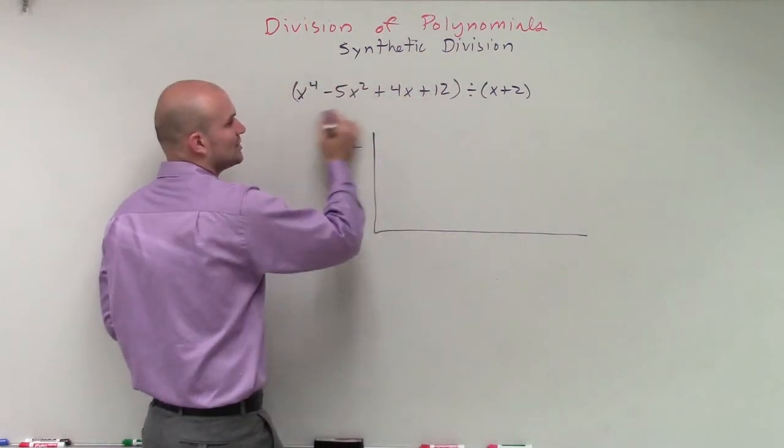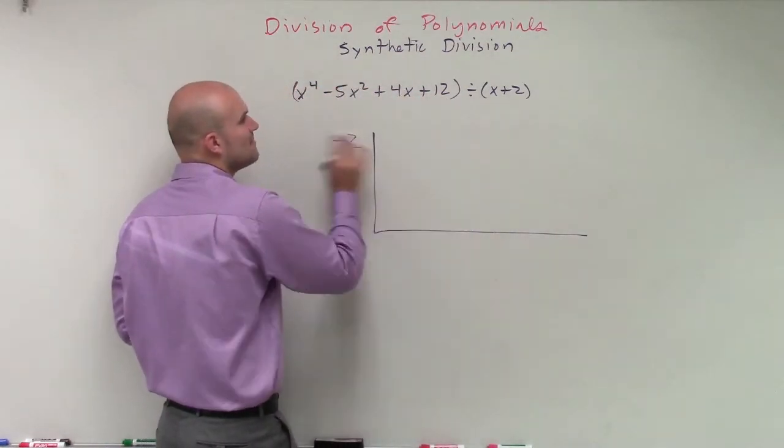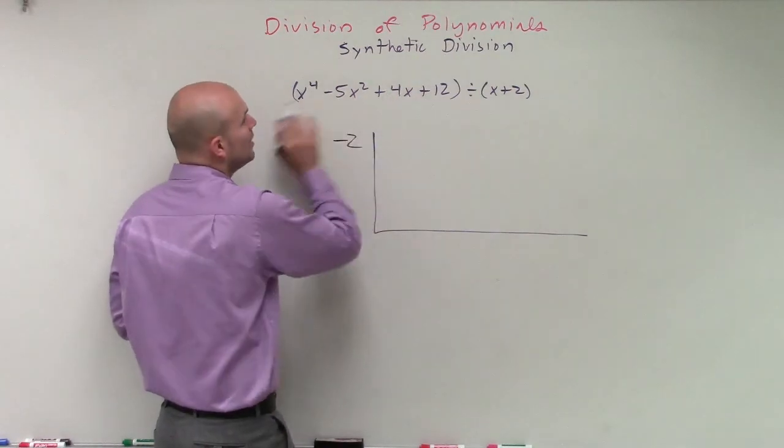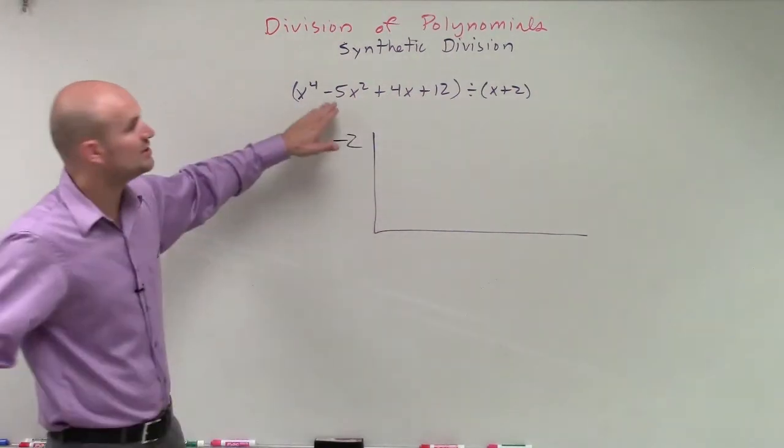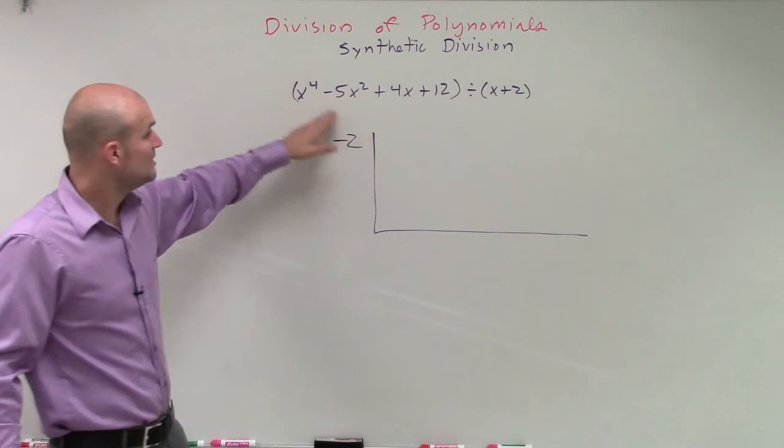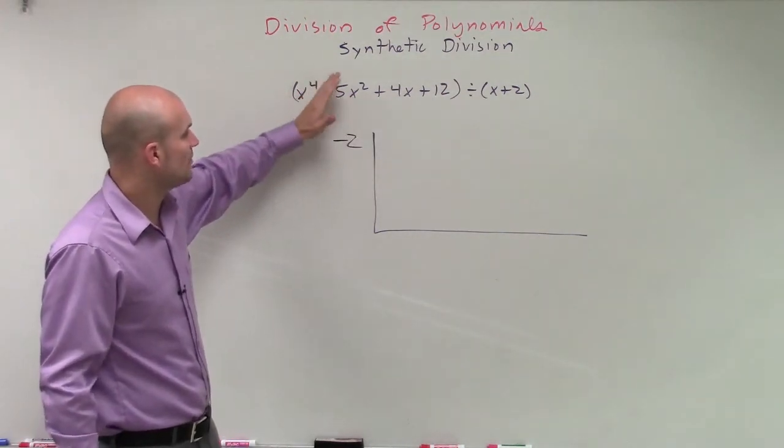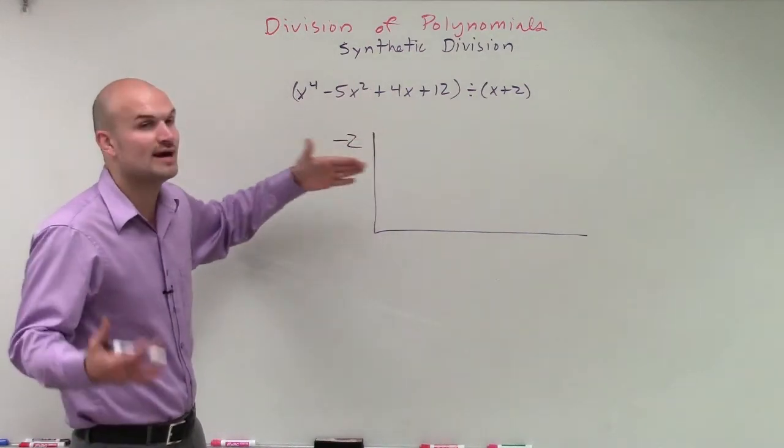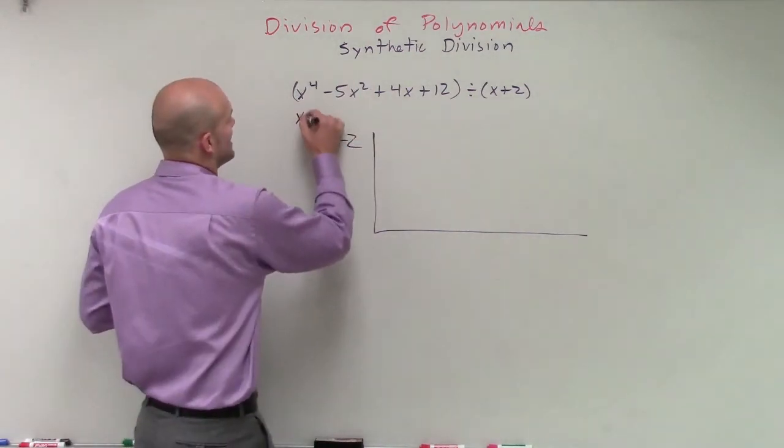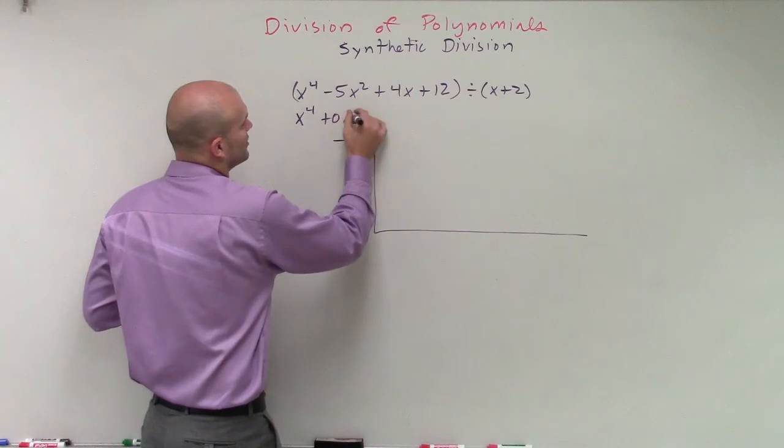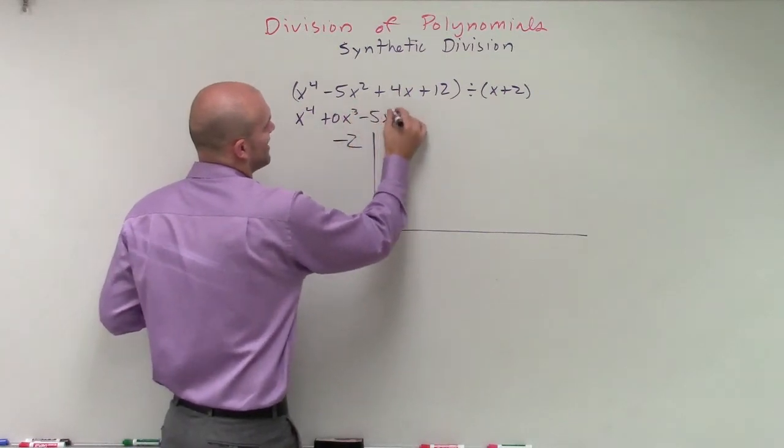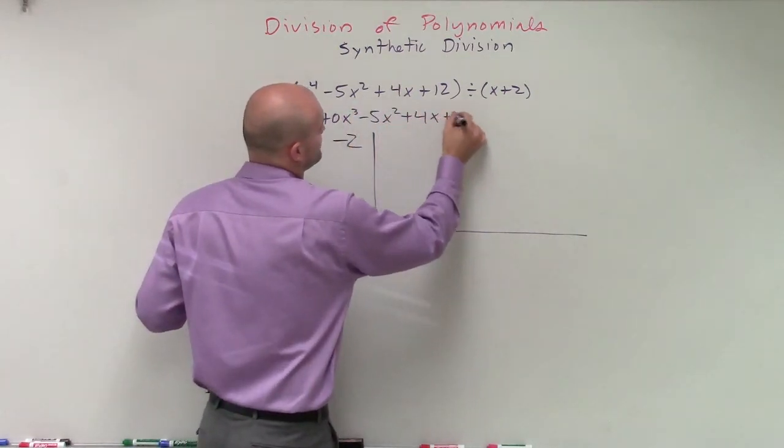Then we take the coefficients and our constants and label them. Make sure we're not missing any, which we are in this case. You can see that we do not have an x cubed. See, this polynomial in descending order goes x to the fourth. There should be x to the cube. So we know that we could rewrite that as x to the fourth plus 0x cubed minus 5x squared plus 4x plus 12.